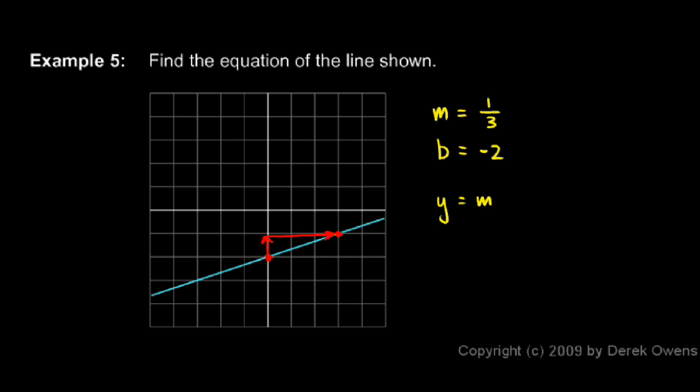The equation for the line is y equals mx plus b. So that means we have y equals 1 third x minus 2. That's our answer, the equation for that particular line.